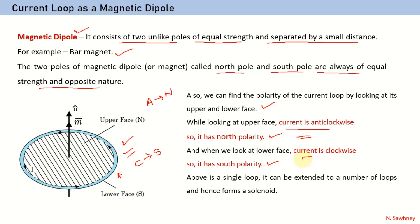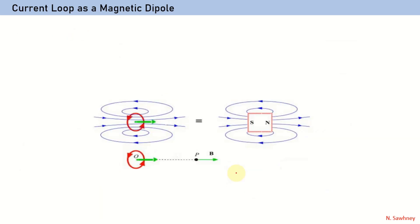So we can say that a single current loop can be extended to form a number of loops, and hence a solenoid is formed. You can also say a bar magnet is equivalent to a solenoid, which we are going to study in detail in later topics. Now, looking at the current loop — the upper face is anti-clockwise so it is the north pole, and the lower face appears as south pole. So the current loop is behaving as a bar magnet.